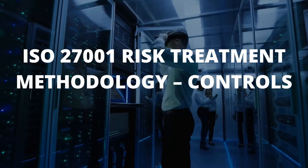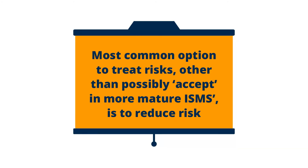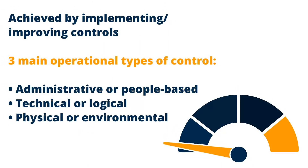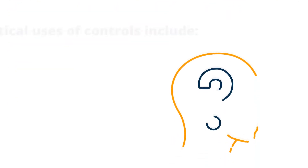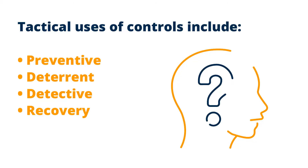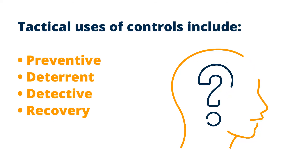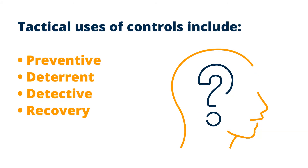The most common option chosen to treat risks is to reduce the risk by implementing controls or improving existing ones. There are three main operational types of control: administrative or people-based controls, technical or logical controls, and physical or environmental controls. Within these three operational types there are several different tactical uses, such as controls designed to prevent a threat from materialising, those designed to deter people from carrying out an undesired action, those that detect if a threat has materialised, or those that enable you to recover after the threat has been dealt with. Operational types and tactical uses of controls are not mutually exclusive and should be used in combination to provide a greater depth of security.